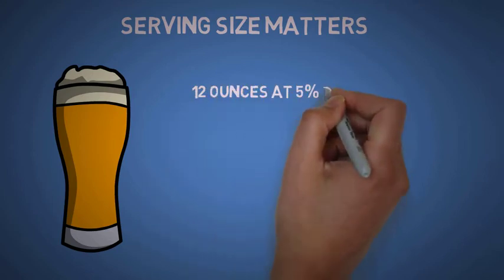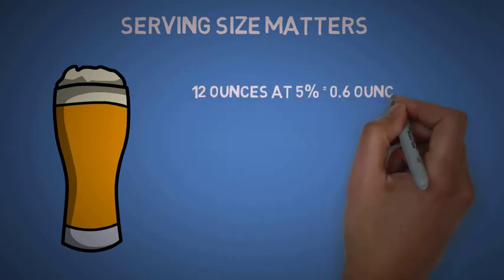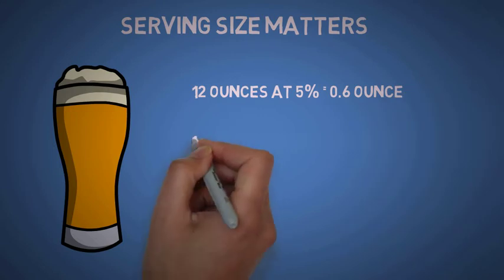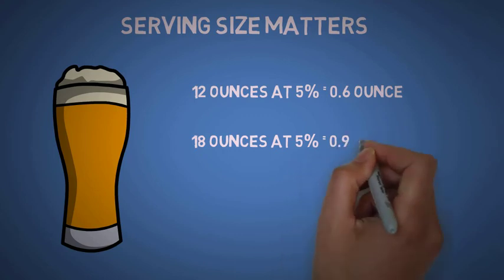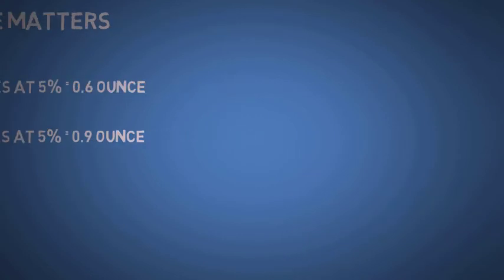12 ounces, for example, of beer at 5 percent is 0.6 ounces, but if you go and see a pint which is about 18 ounces at 5 percent, you actually get 0.9 ounces of alcohol, which is more than one standard drink.